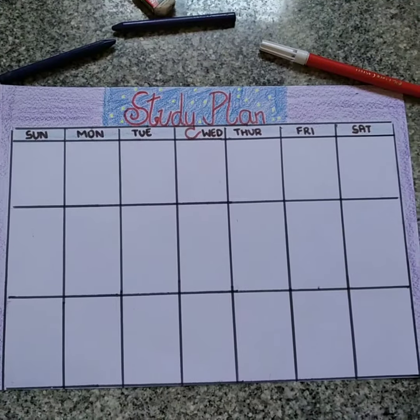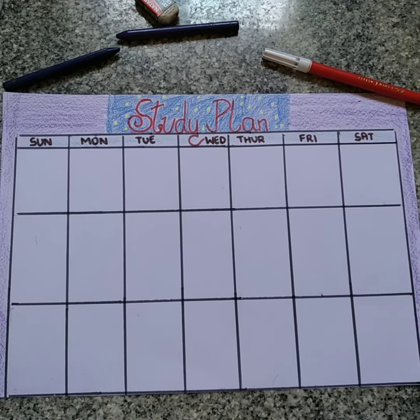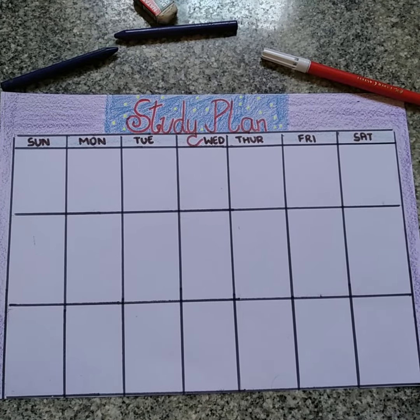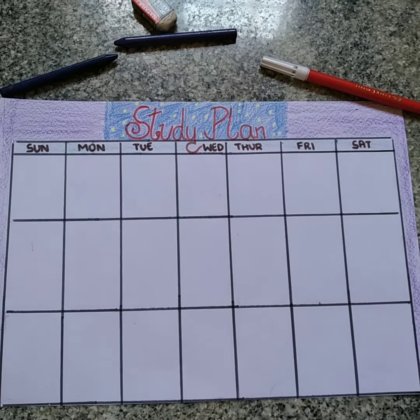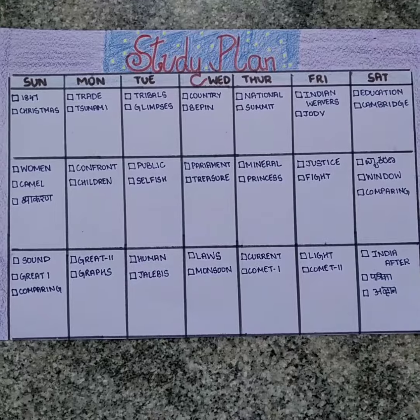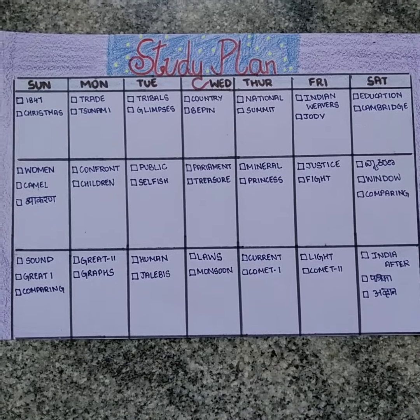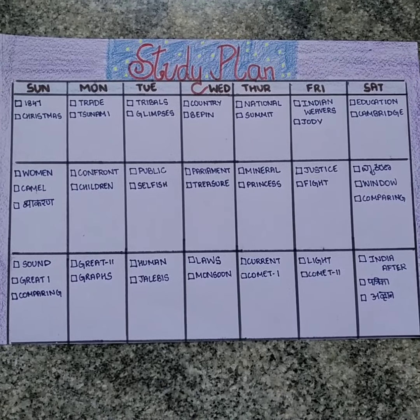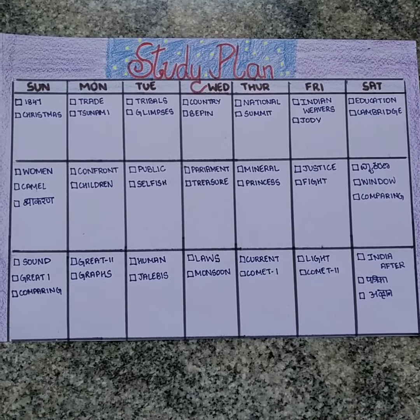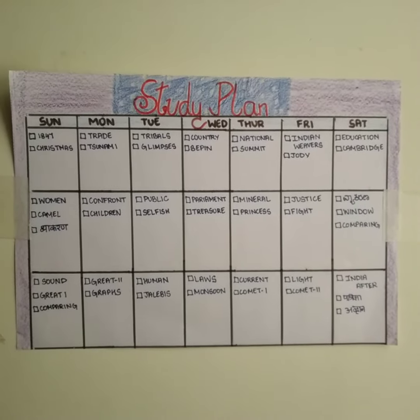Write the days of the week starting from Sunday or Monday. Jot down the chapters you have to complete in these grids. Along with it, draw some boxes so when you complete it, you can tick. Put it on the board so you can follow.